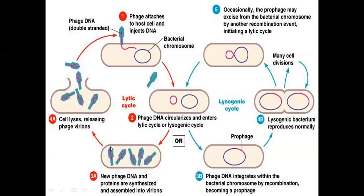In the lytic cycle, both genomes are cut and random packaging occurs — the packaged DNA goes into the phage head. The bacterial cell membrane bursts and all phages are released along with the genetic material. In the lysogenic cycle, there is no cutting — the two genetic materials integrate to make a larger genome. The red color represents the viral genome integrating with the bacterial genome, followed by cell division producing two cells, one going lysogenic and one going lytic.